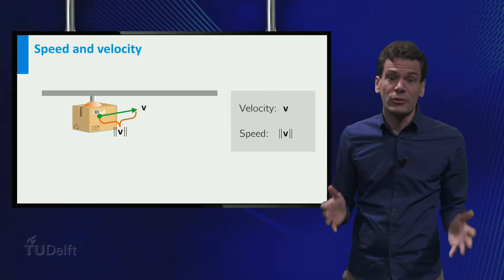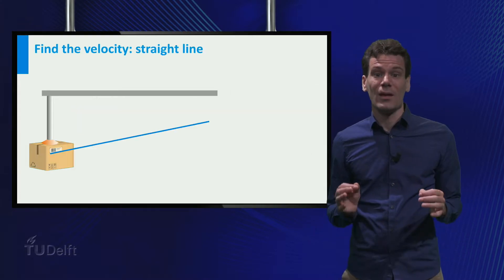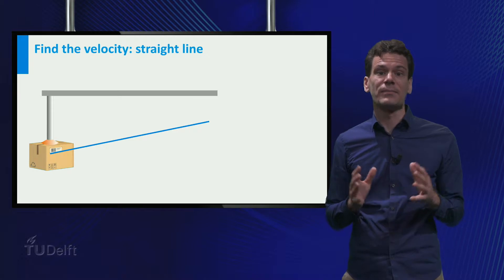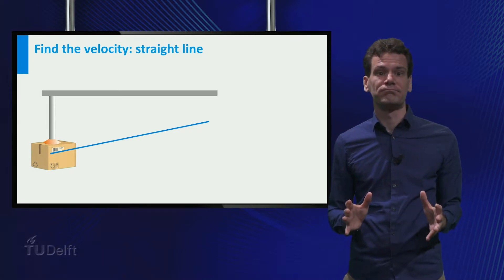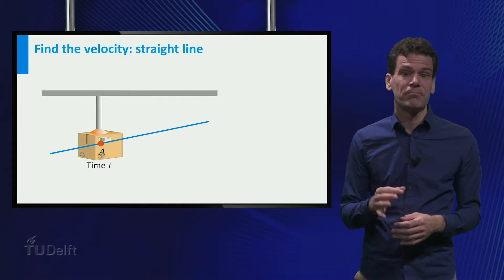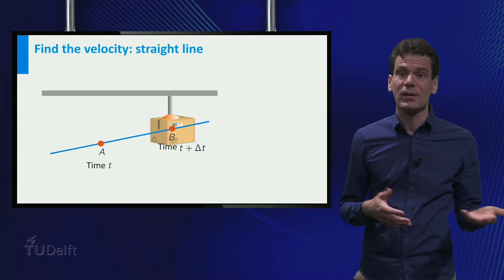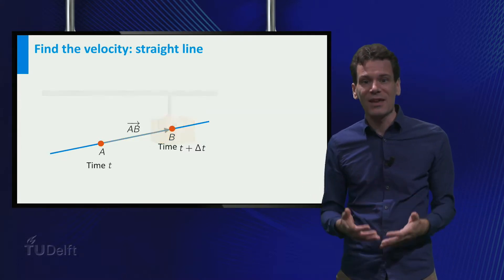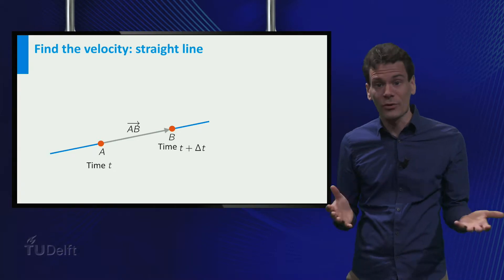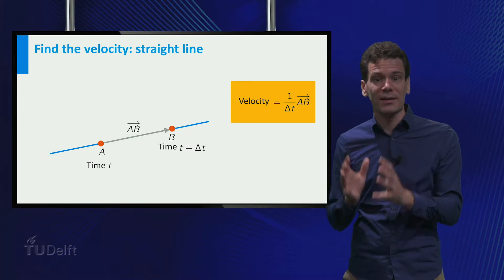Ok, that did not solve anything yet. But how do we find this velocity vector? Well, first we assume that our box is moving at a constant speed and along a straight line. Suppose at some time t the box is at position a, and some time Δt later it is at position b. The change of position is given by the displacement vector a to b. The velocity is then defined as the vector a to b divided by Δt.